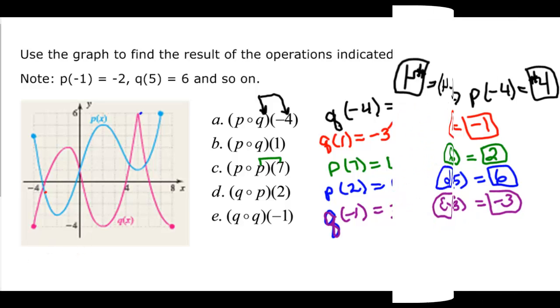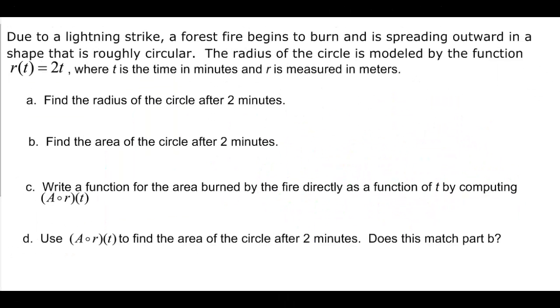All right, I think we have one more thing to do, and that's to look at a story problem. So due to a lightning strike, a forest fire begins to burn, and is spreading outward in a shape that is roughly circular. The radius of the circle is modeled by the function r of t equal 2t, t is in minutes, r is in meters, so find the radius of the circle after 2 minutes. Well, the radius, that would be r of 2, and that would be 2 times 2, so it's going to be 4 meters, since r is in meters.